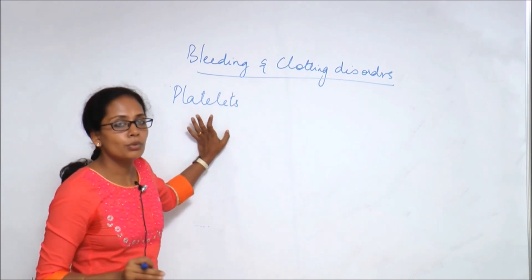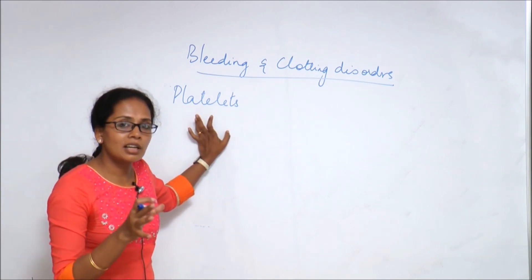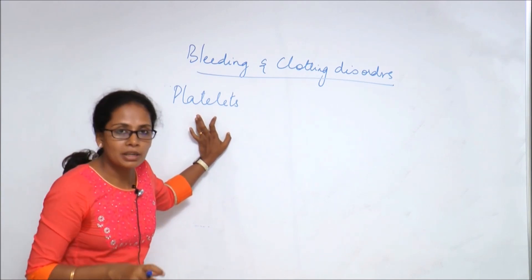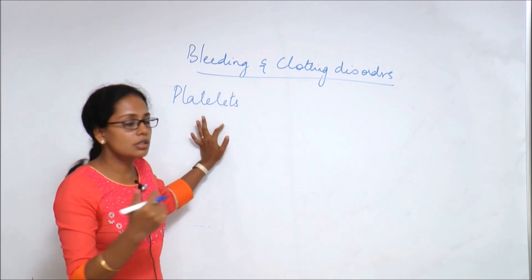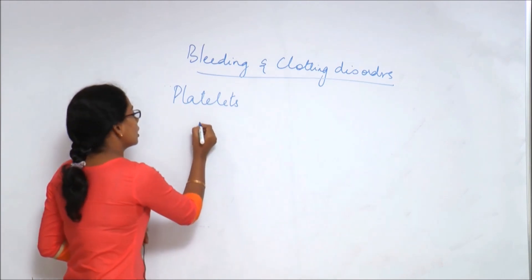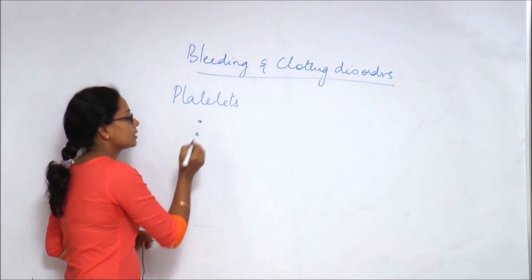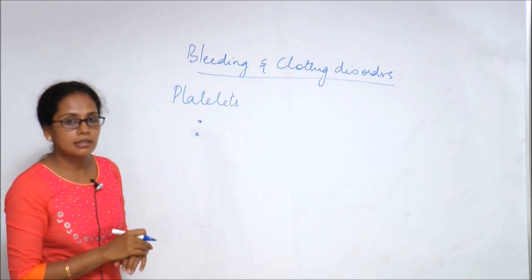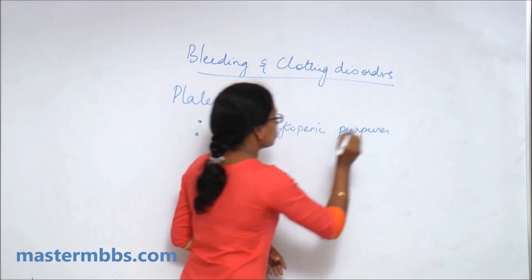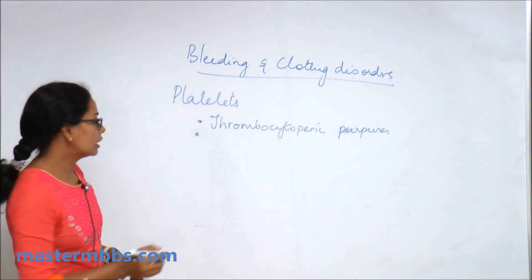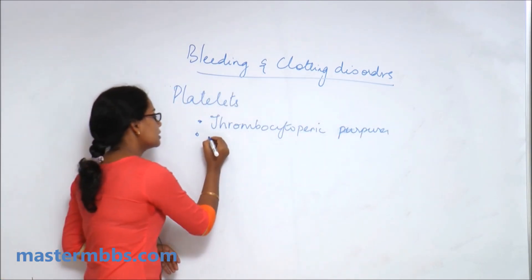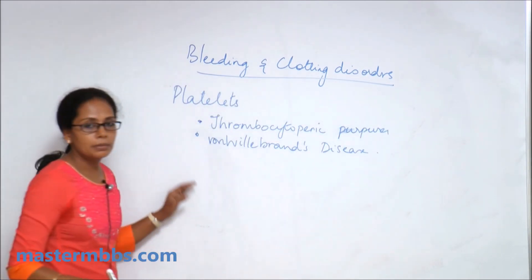So what happens when there is an abnormality in platelets? There are two conditions which can be categorized under this heading: one is thrombocytopenic purpura, and another is von Willebrand disease.